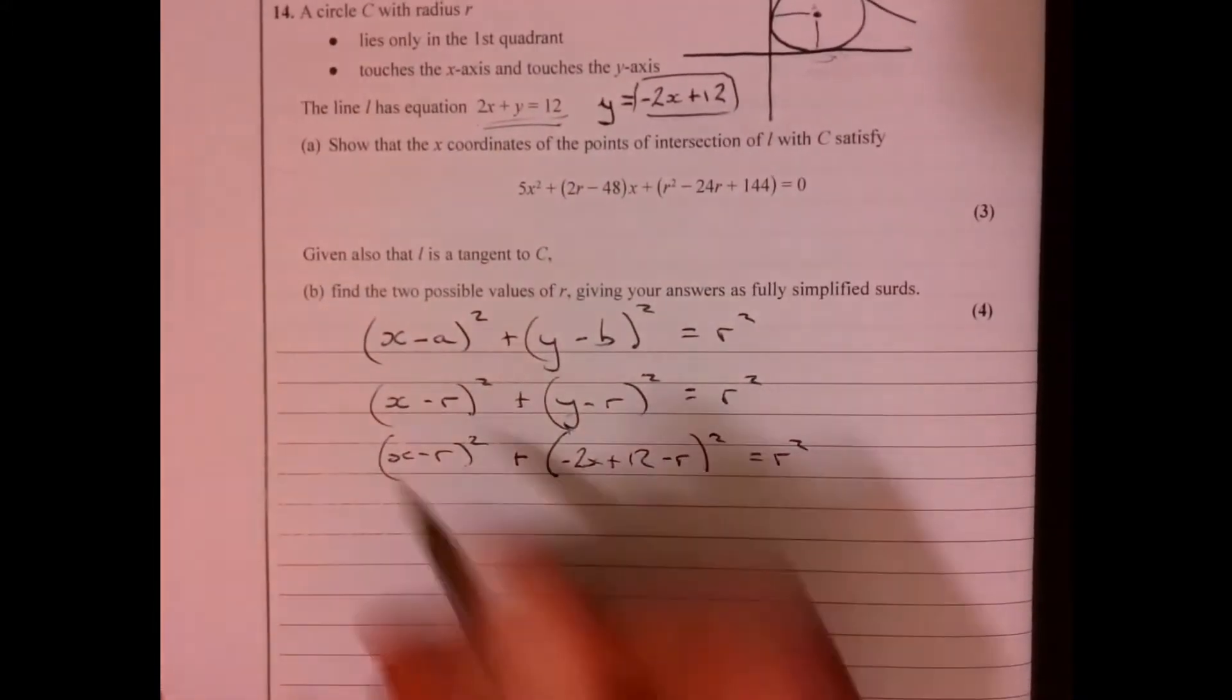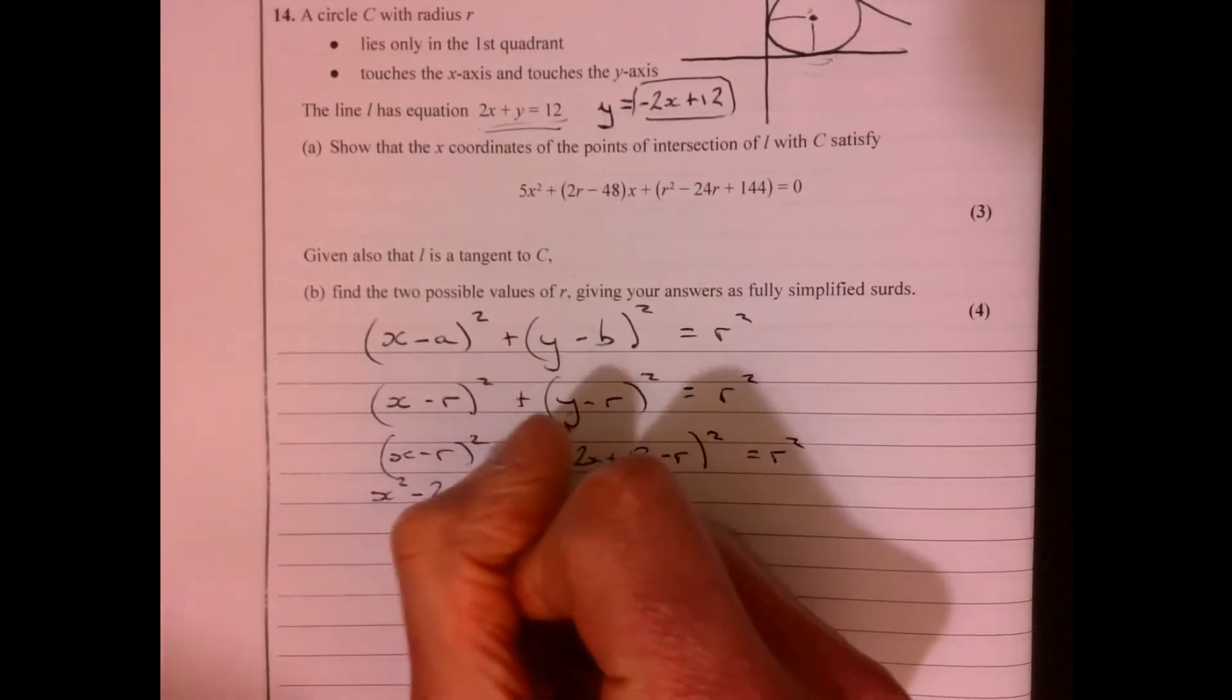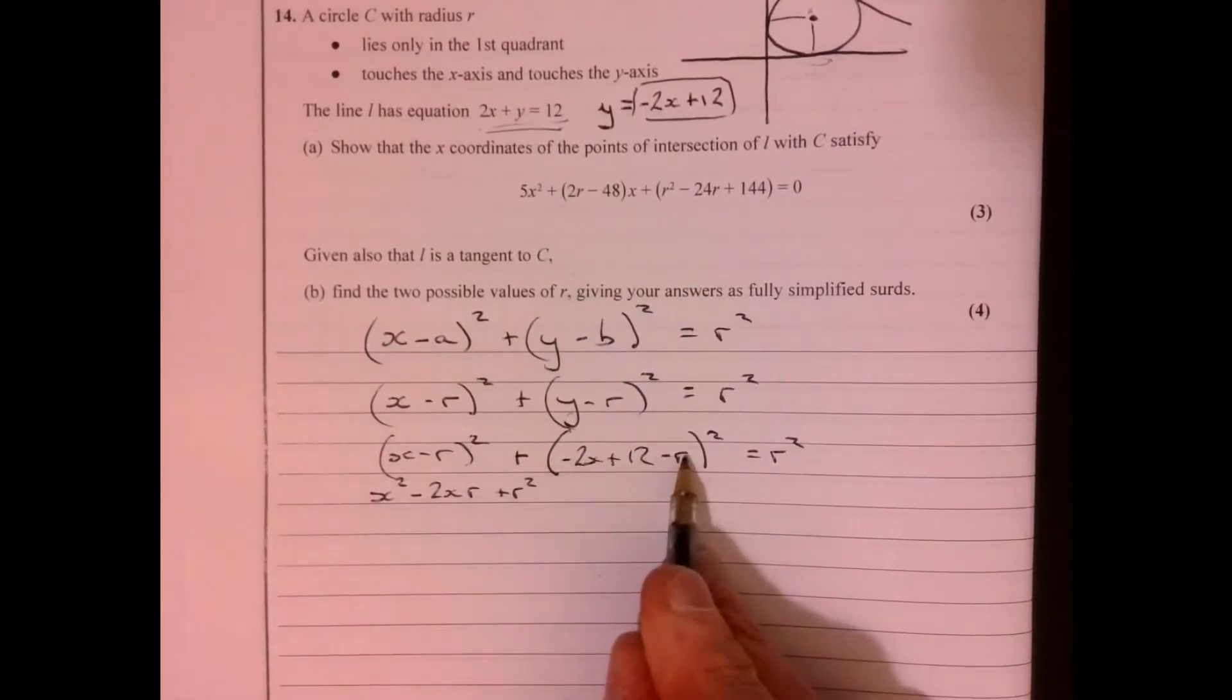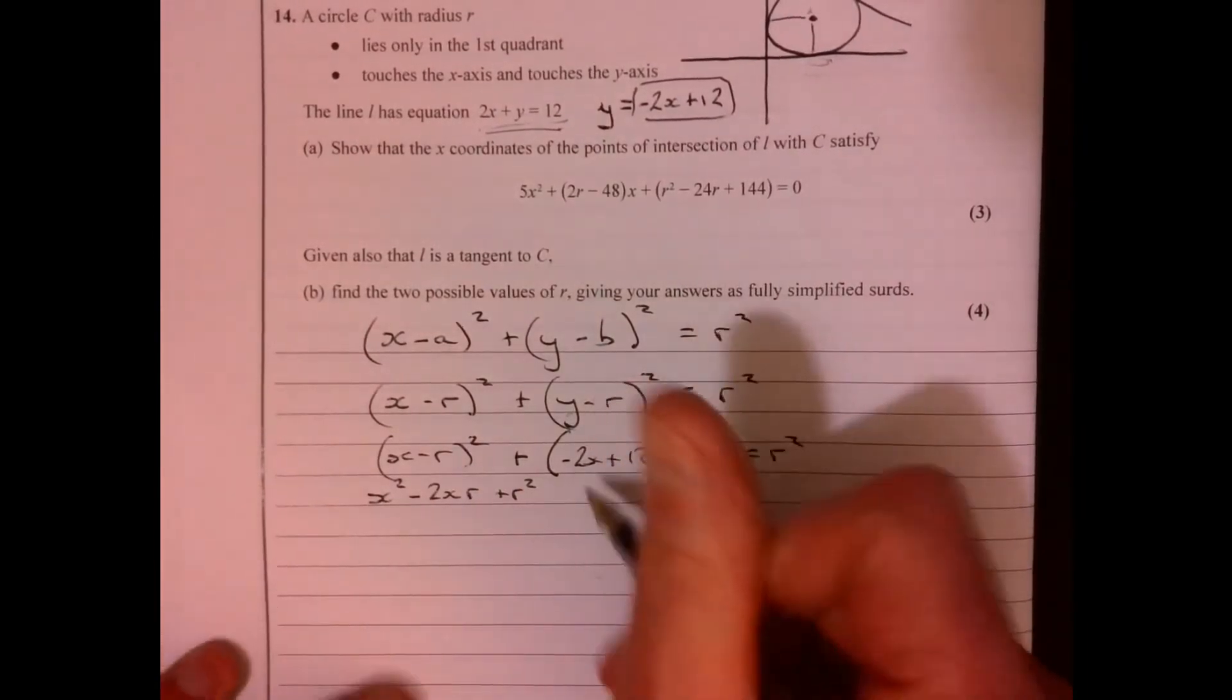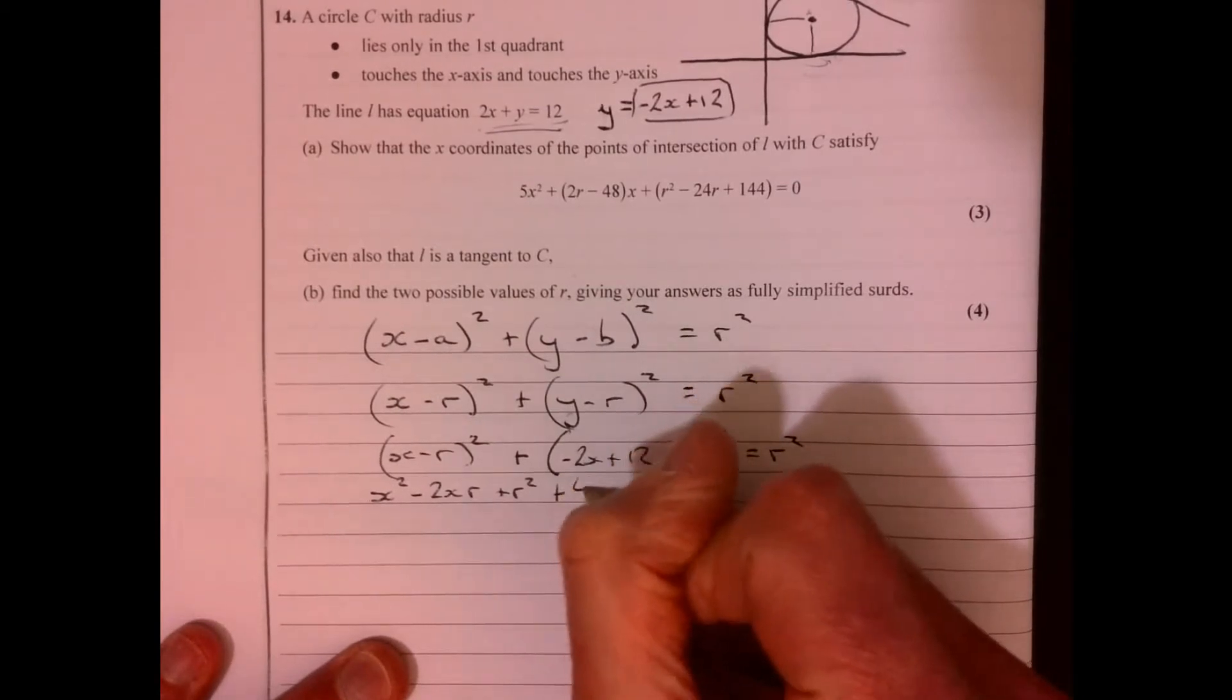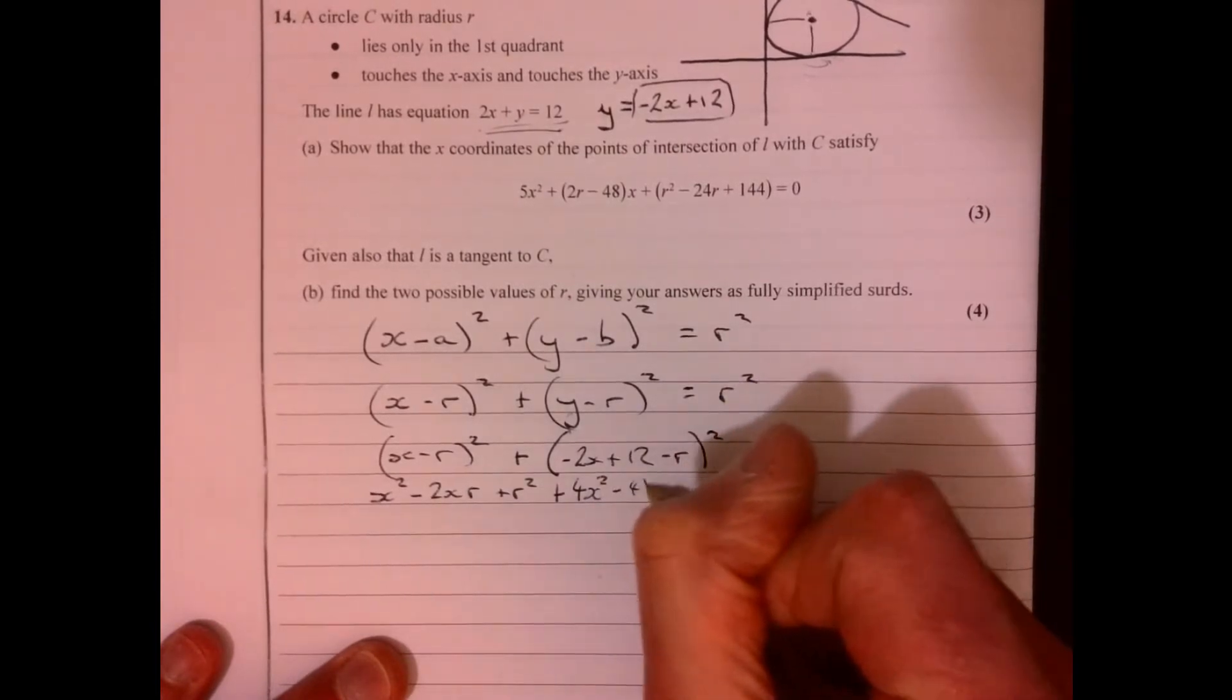Right, bit of multiplying out, a little bit of bracket stuff. So if we get this one, that's going to give me x² - 2xr + r². And to be honest with you, you're better off with this actually just writing it separately. I quite often just go somewhere else on my page to go and do that part. I've already done it so I'm going to write it down.